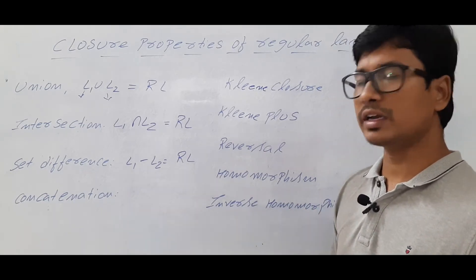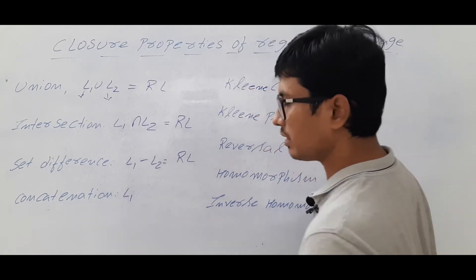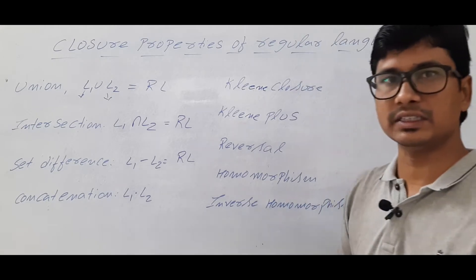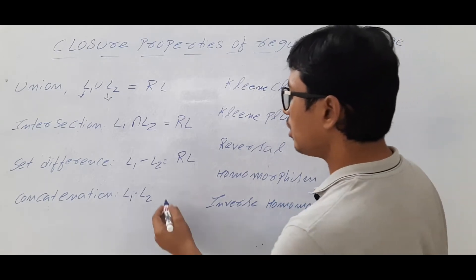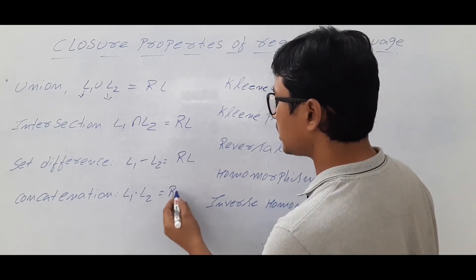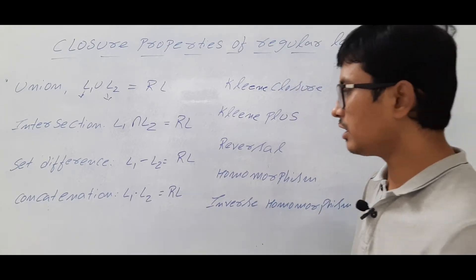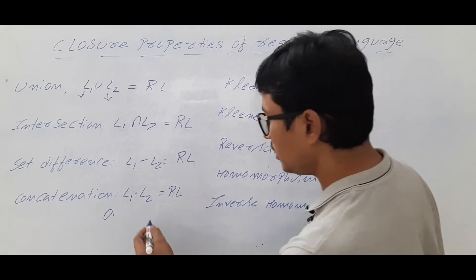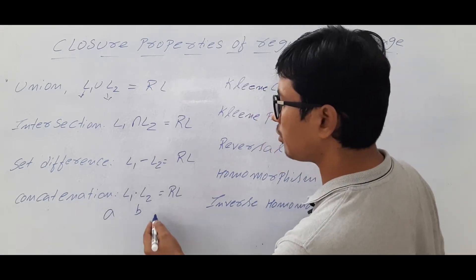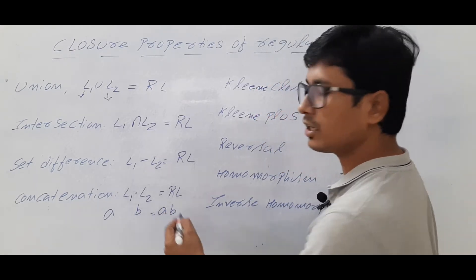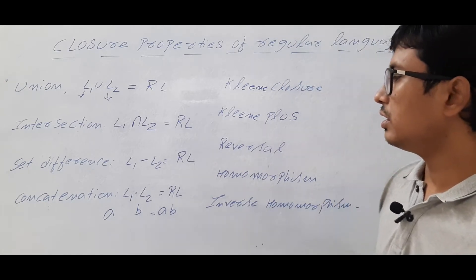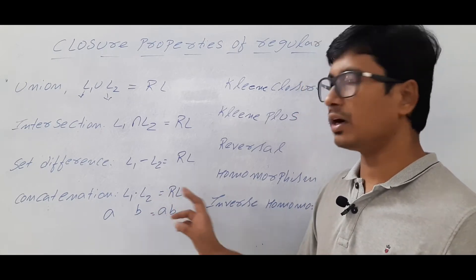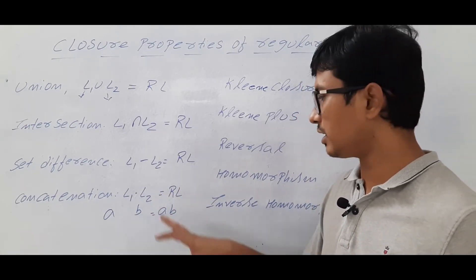Coming to concatenation: if you have language L1 and language L2 and you apply concatenation, the language you generate will also be a regular language. I think everyone knows what concatenation means — if you have string 'a' and string 'b', concatenation gives you the string 'ab'. So if both languages are regular and you perform concatenation, the resulting language is also regular.